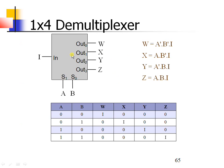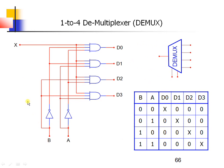Let us see this with an example: the 1-to-4 demultiplexer, where 1 indicates the input and 4 indicates the number of outputs. As there are 4 outputs, there are a total of 2 selection lines. Here is the truth table for the demultiplexer — a and b are the selection lines, and w, x, y, z are the outputs. From this expression we can plot the circuit using logic gates, giving us the logic diagram and representation of the DEMUX.